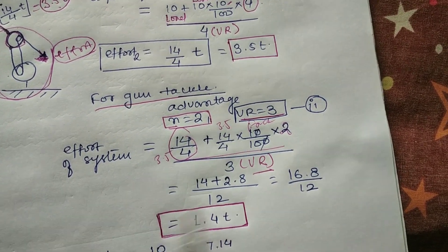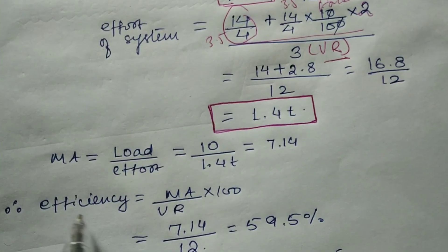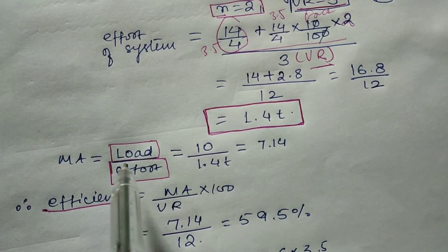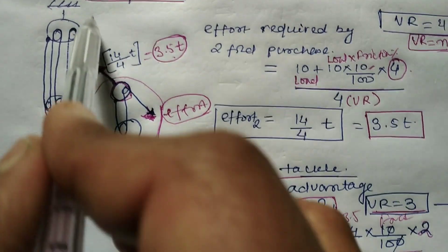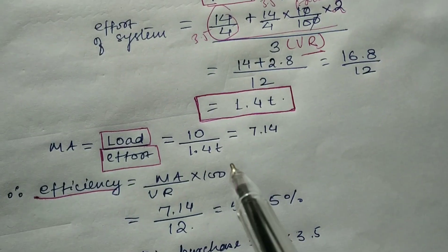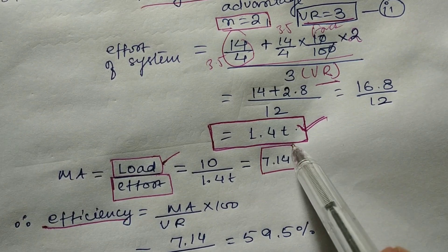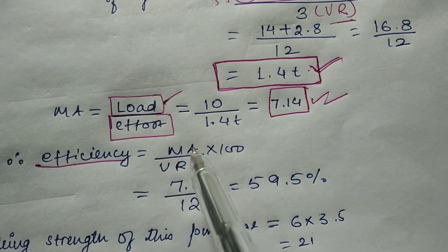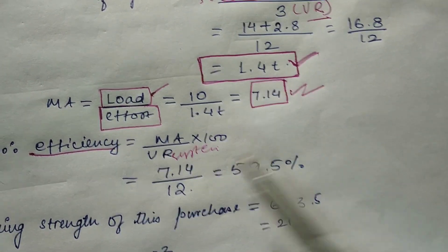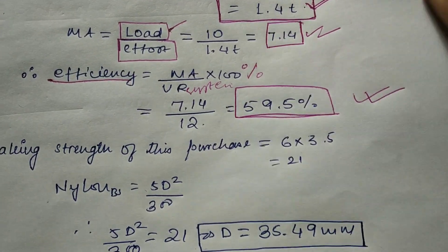Using the formula, we get the final effort as 1.4 tons. Now we calculate the efficiency of the system. Efficiency equals mechanical advantage divided by velocity ratio multiplied by 100. Mechanical advantage is load over effort: load is 10 tons and effort is 1.4 tons, giving MA = 7.14. The resultant velocity ratio is 4 × 3 = 12. Therefore, efficiency equals 59.5%.